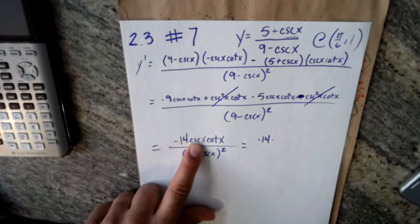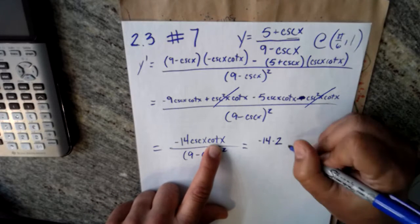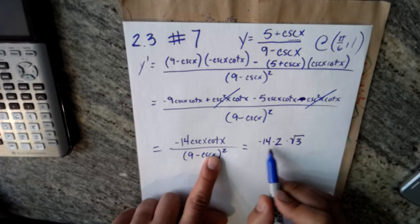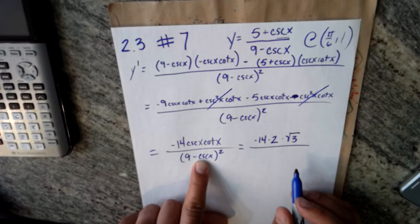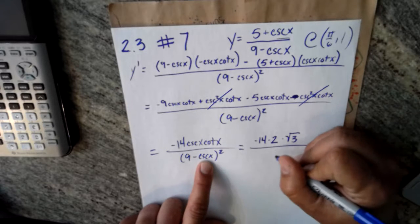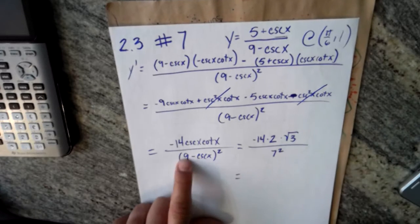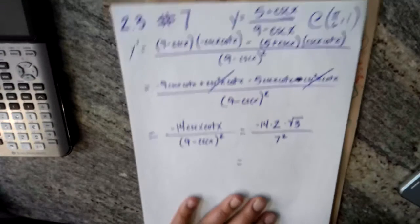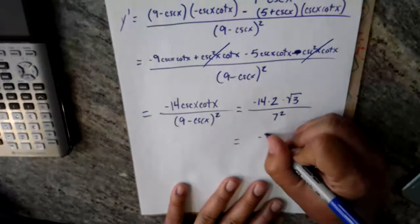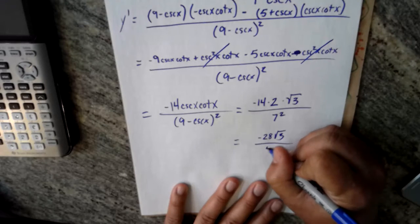Okay, when you put in pi over six for x, you get cosecant of pi over six is positive two, cotangent of pi over six is radical three over three. Cosecant of pi over six is two, so then you get seven squared on the bottom, nine minus two. Okay, so then you get negative twenty-eight radical three over forty-nine.